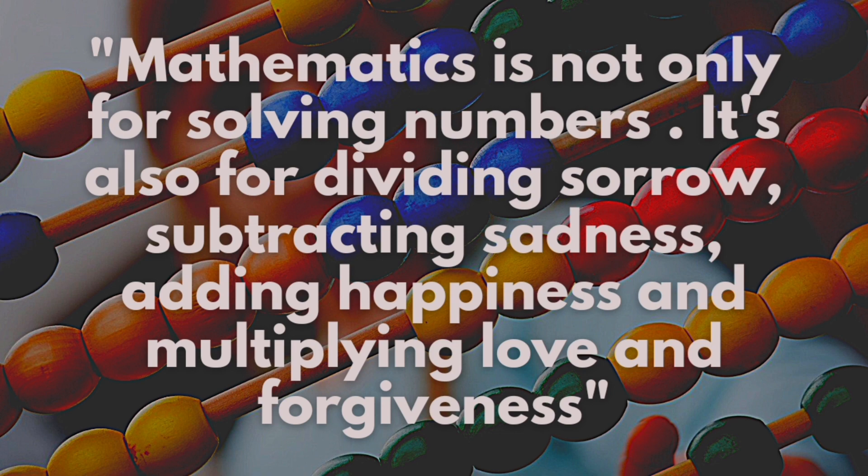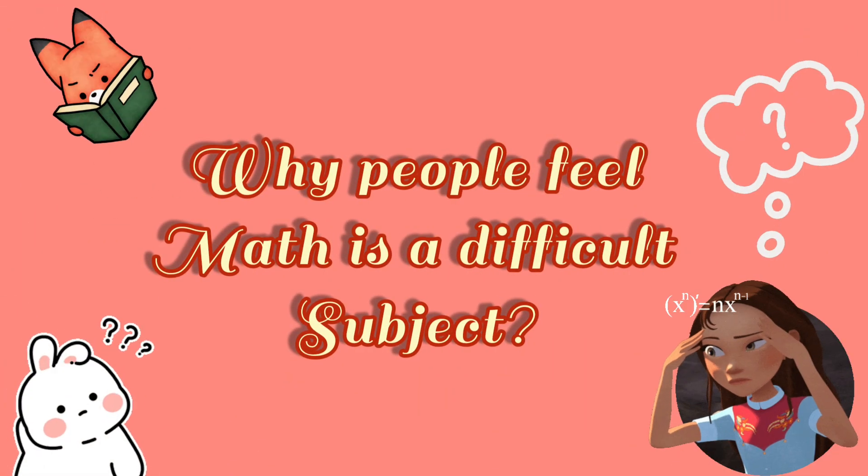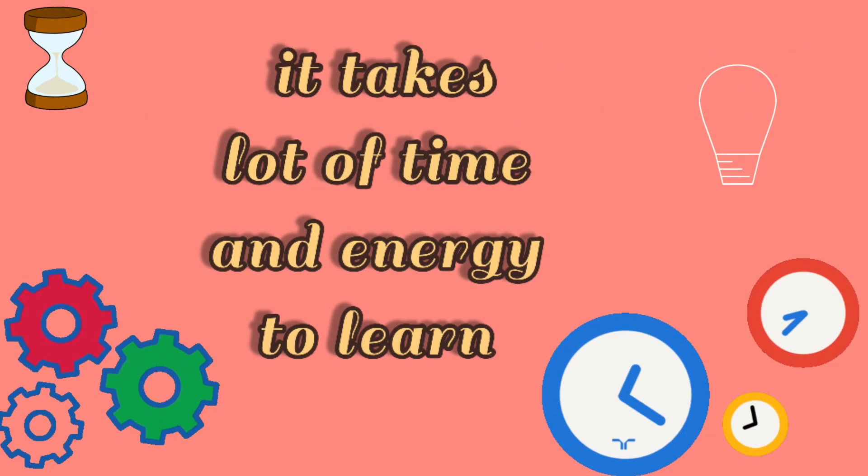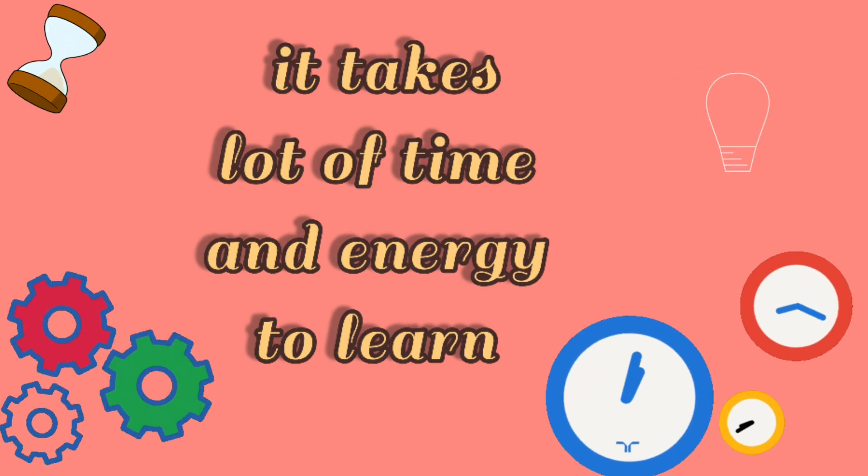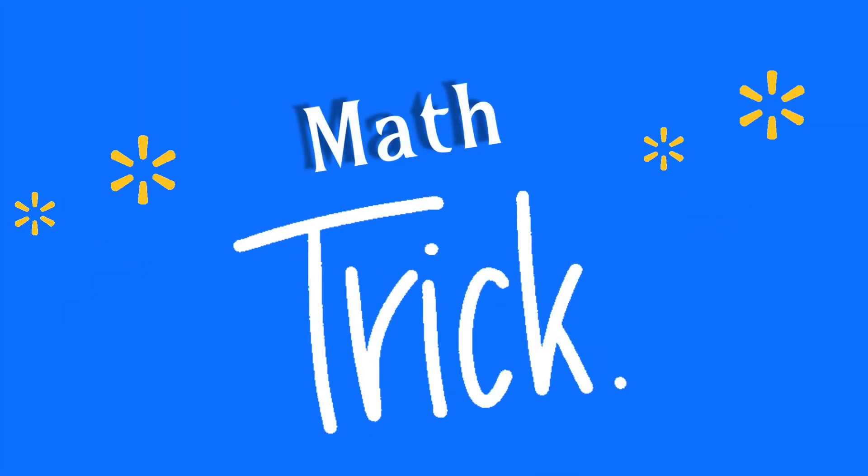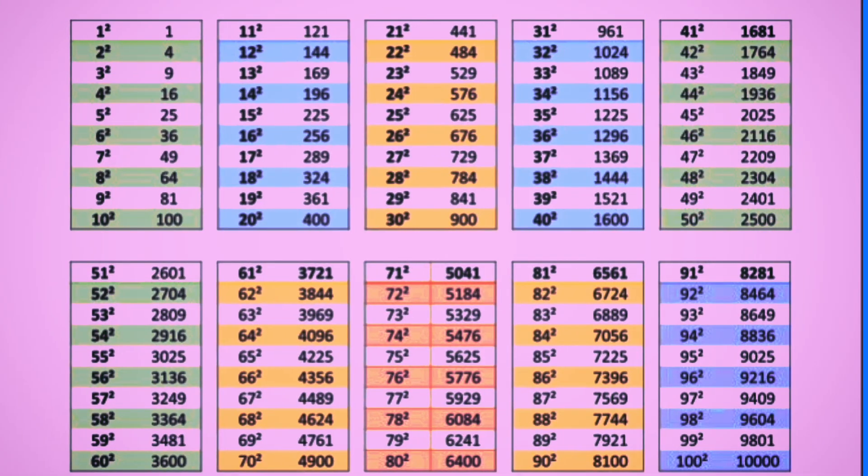But many people feel math is a difficult subject. Math seems difficult because it takes a lot of time and energy to learn. The main reason for disliking this subject is difficulty in understanding. Here is a math trick for finding squares of two-digit numbers easily.